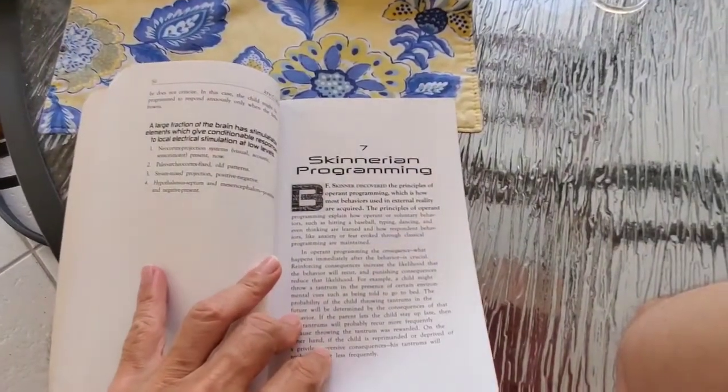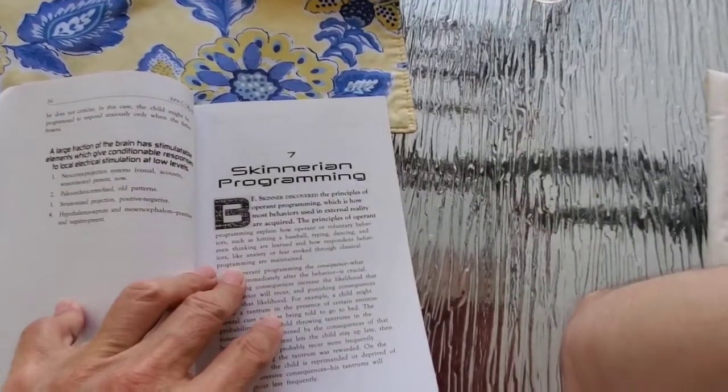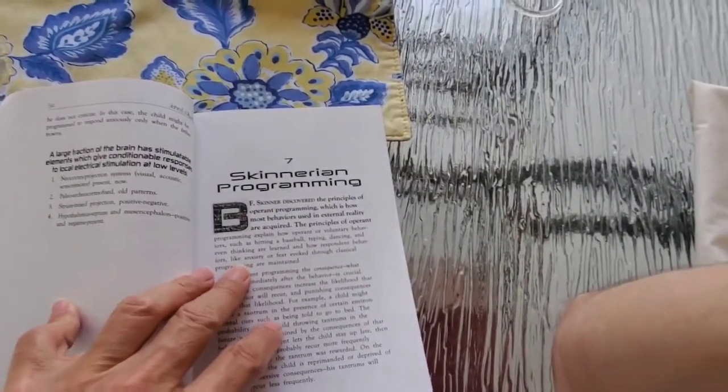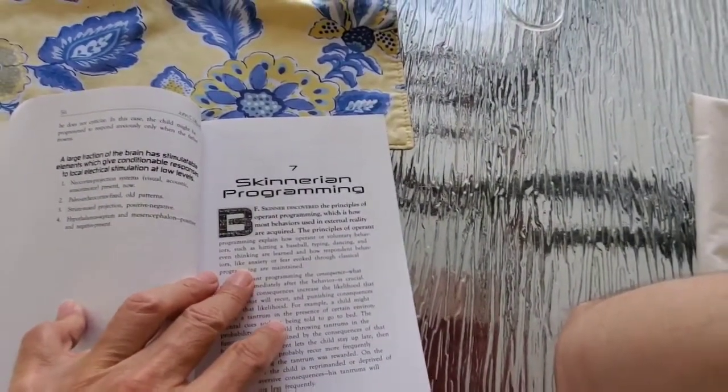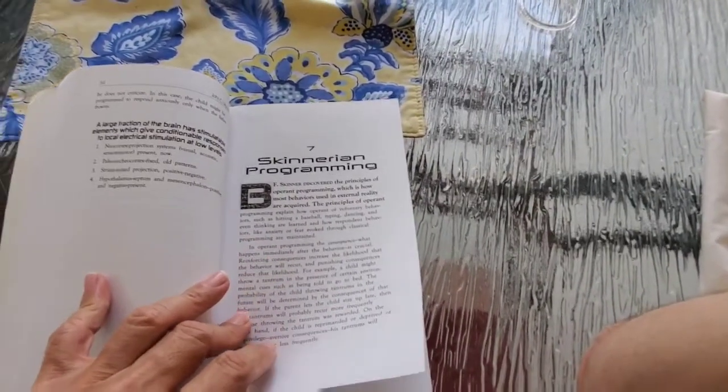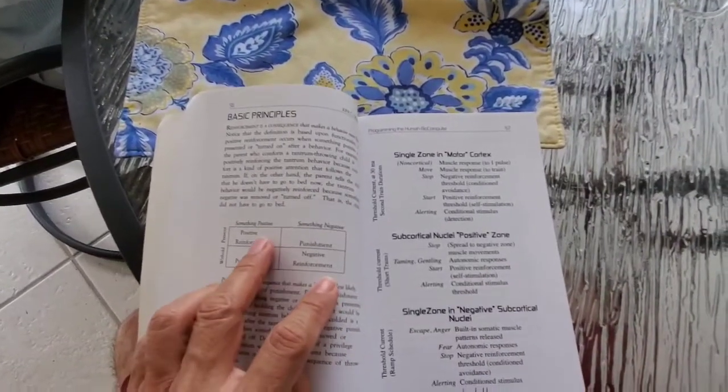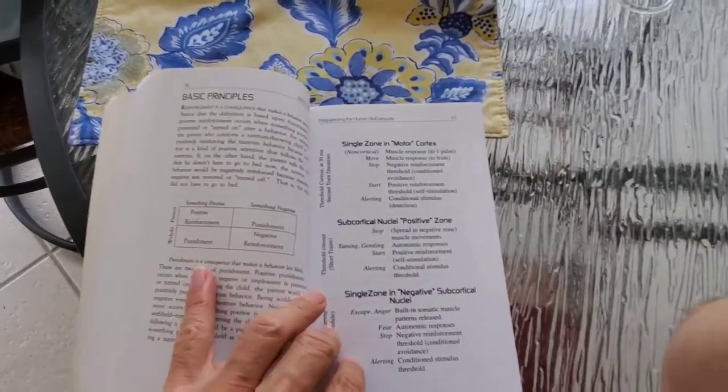Skinnerian programming. B.F. Skinner discovered the principles of operant programming, which is how most behaviors used in external reality are acquired. Basic principles: something positive, something negative, single zone.